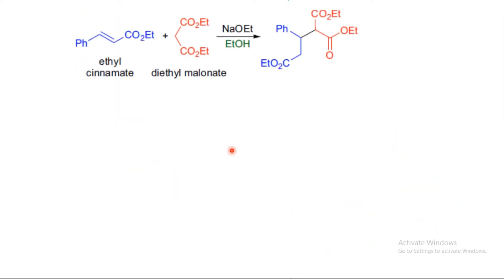If you see here, ethyl cinnamate is the Michael acceptor because it is unsaturated — specifically alpha-beta unsaturated compounds are called Michael acceptors. Here, diethyl malonate is the Michael donor. The base acquires the proton from diethyl malonate, which generates the enolate. That enolate then attacks on the alpha-beta unsaturated compound to form the Michael adduct.